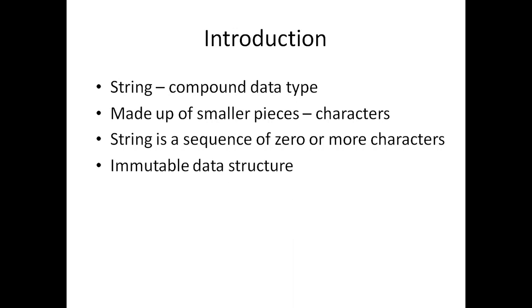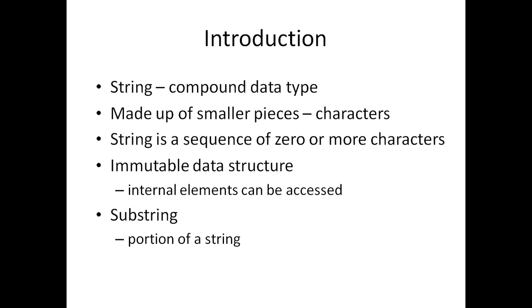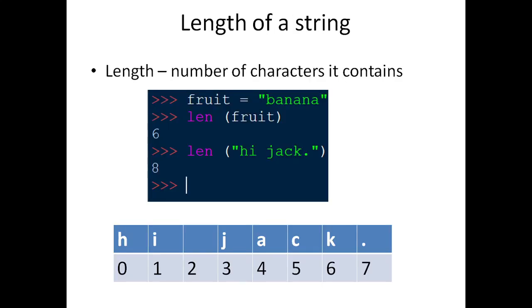Strings are immutable data structures. The immutable data structure means the internal elements of the string can be accessed. If you have a string like 'apple', the individual characters a, p, p, l, e can all be accessed. A portion of a string is known as a substring. For example, 'app' taken from 'apple' is a substring. We also have a function called length to find the length of a string — the number of characters it contains.